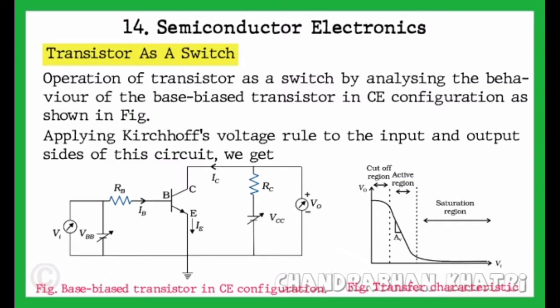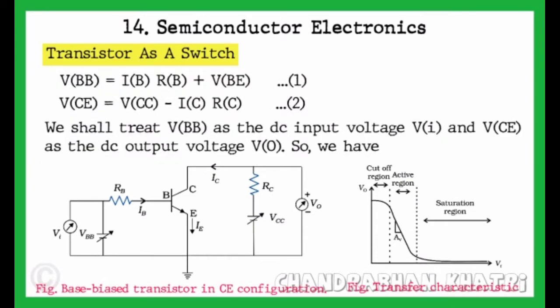Applying Kirchhoff's voltage rule to the input and output sides of this circuit, we get VBB equals IB into RB plus VBE. This is equation 1. And VCE equals VCC minus IC into RC. This is equation 2.